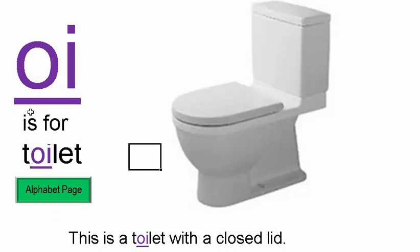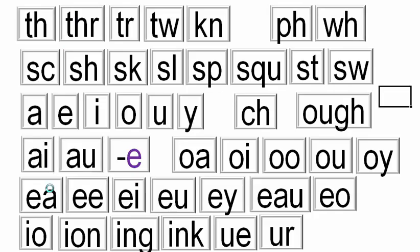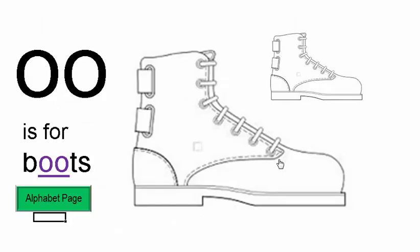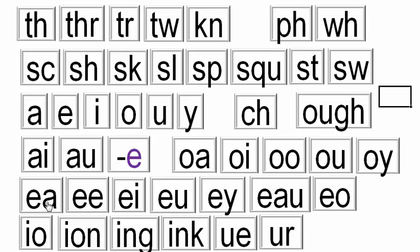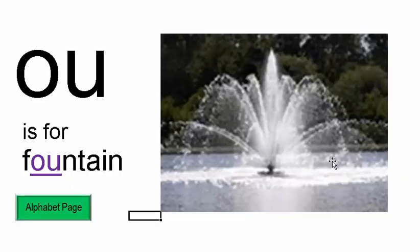OI — TOILET. OU is for BOATS. Here are two boats. OU is also for FOUNTAIN. Here's a fountain.